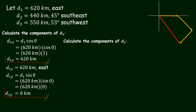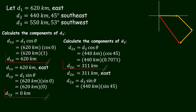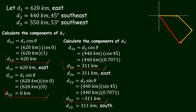Now we calculate components of D sub 2. The equation is D sub 2x equals D sub 2 cosine theta. By substitution, we have 440 kilometers times cosine 45. Cosine 45 is equal to 0.7071, giving D sub 2x equals 311 kilometers east. For the y component, D sub 2y equals D sub 2 sine theta. By substitution, we have 440 kilometers times sine 45. Sine 45 is the same as cosine 45, equal to 0.7071, giving a result of negative 311 kilometers. We put a negative sign on D sub 2y because the y component of D sub 2 is pointing south.